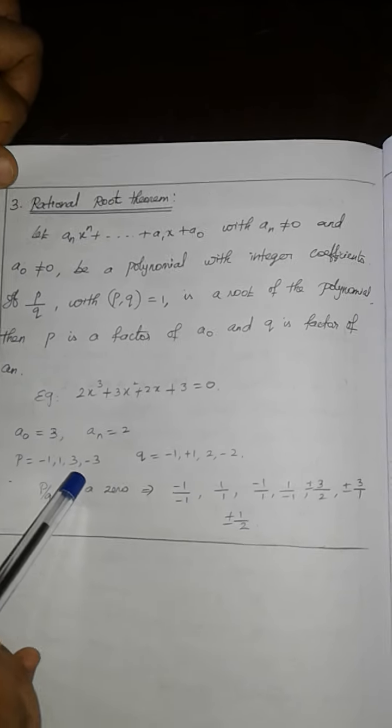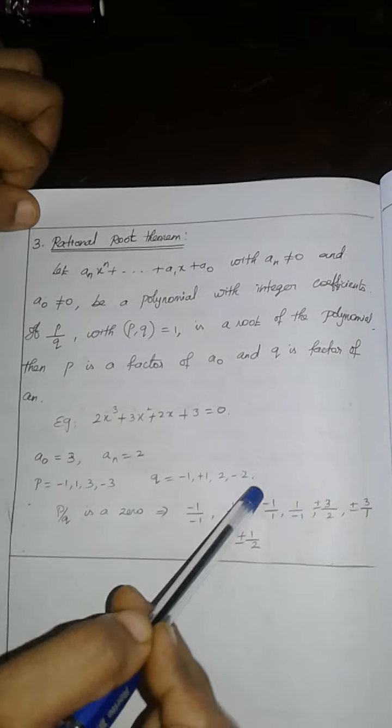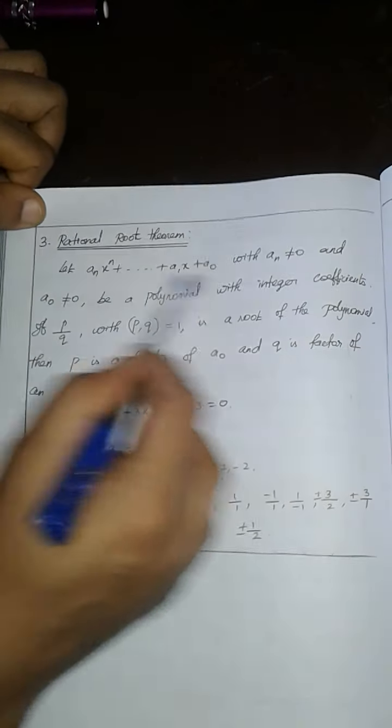If we divide this table, plus 1, minus 1, plus 2, minus 2. Then p by q is a root.